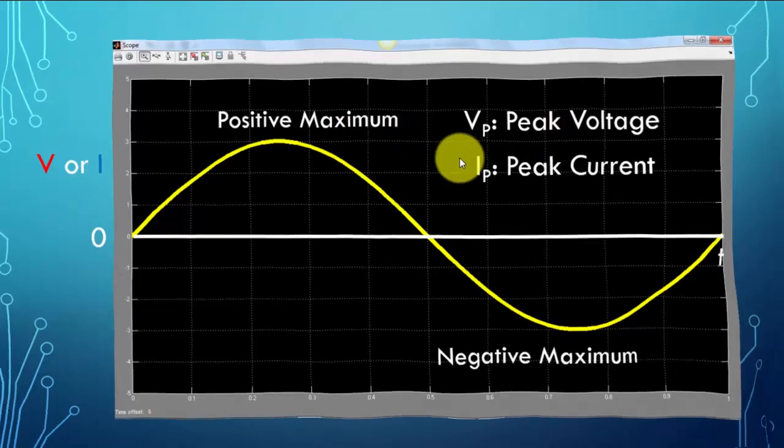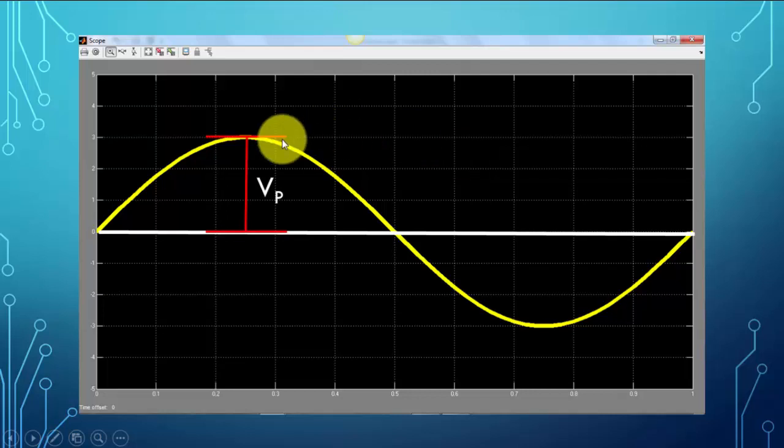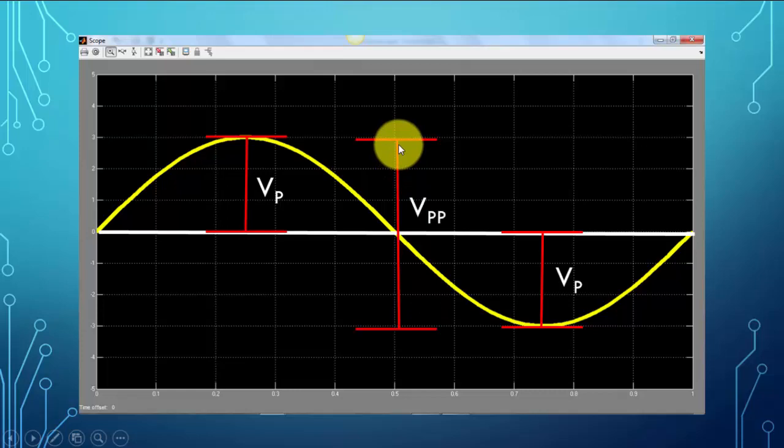We labeled the peak voltage as VP, defined from the zero axis all the way to the peak amplitude. Likewise, we can define on the negative side the peak amplitude for this case. And for sine wave, in this example, these two are equal. Going from the negative maximum to the positive maximum, we call that the peak to peak voltage.